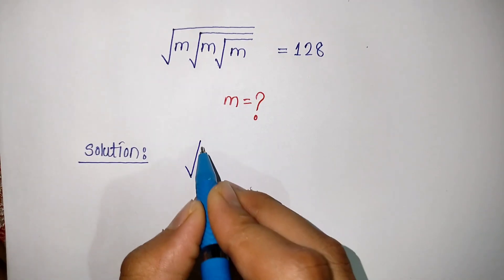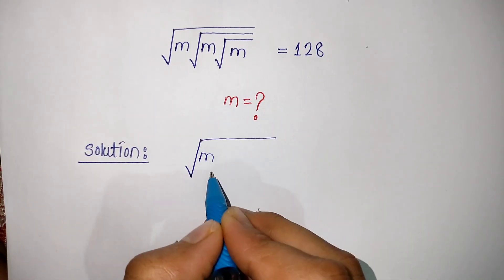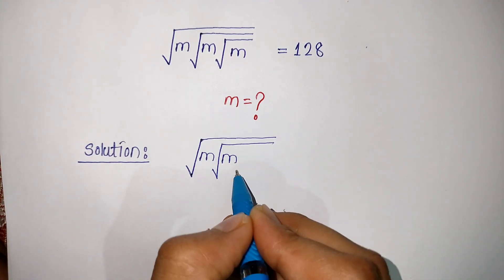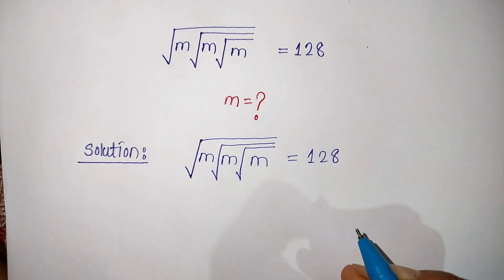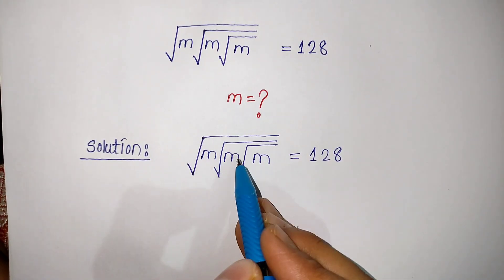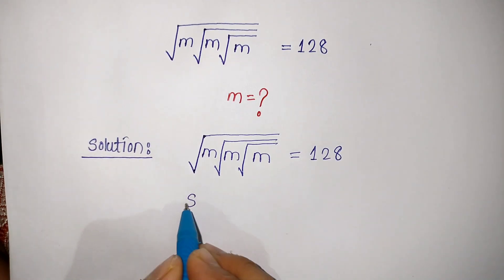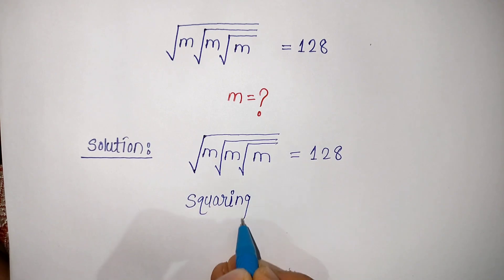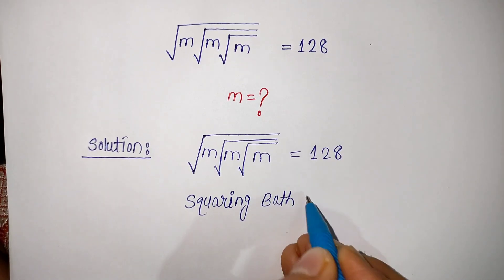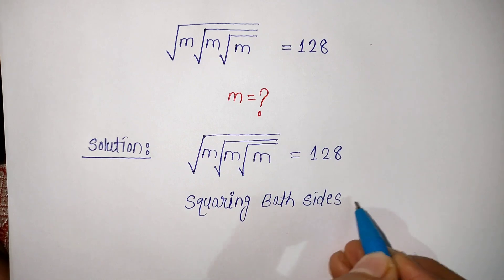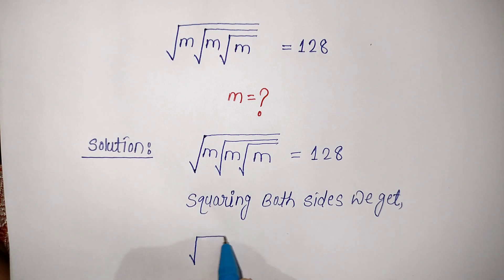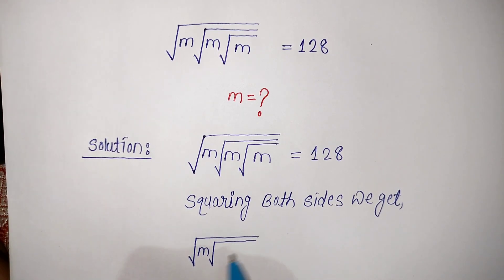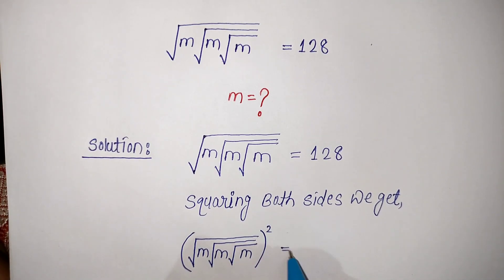First we write our question: under root of M into under root of M into under root of M is equal to 128. To remove this square root we have to square both sides. Squaring both sides, we get: under root of M into under root of M into under root of M, all squared, is equal to 128 squared.